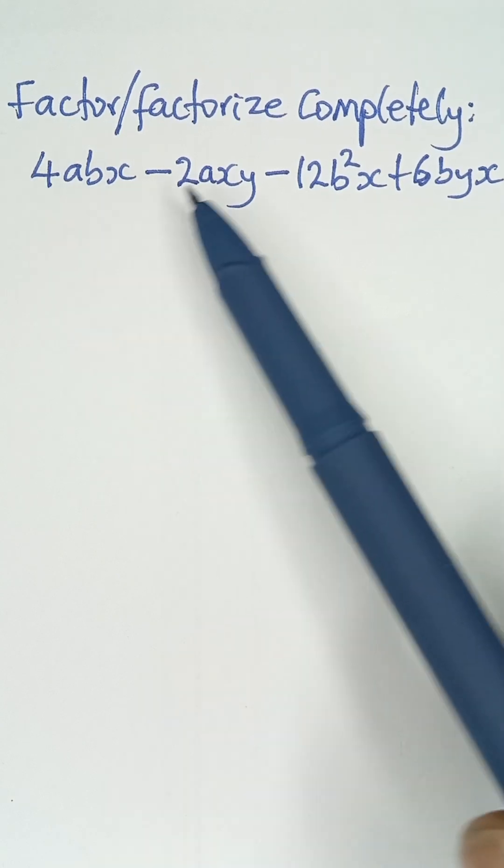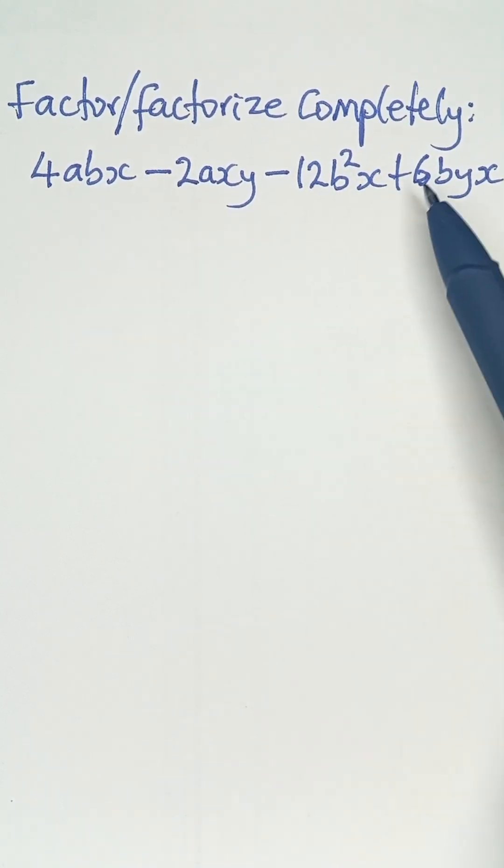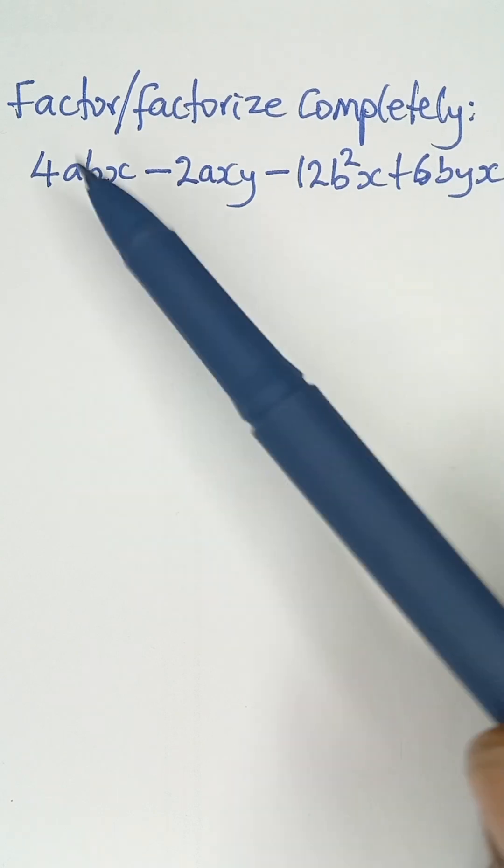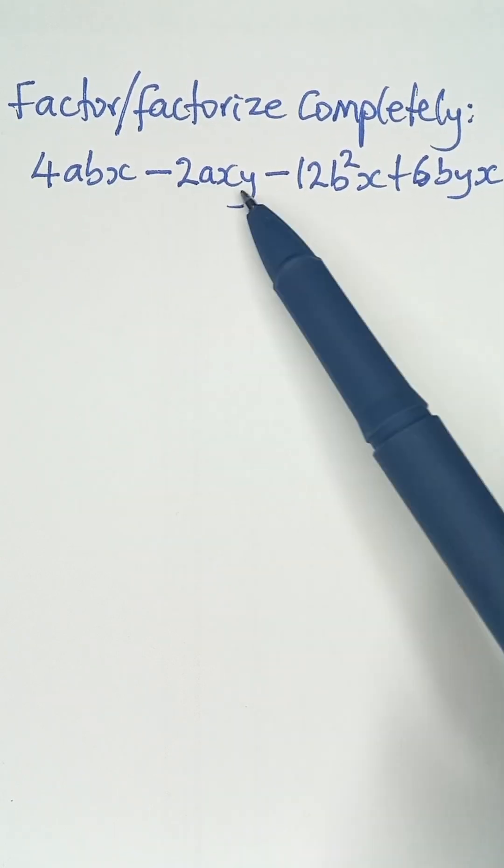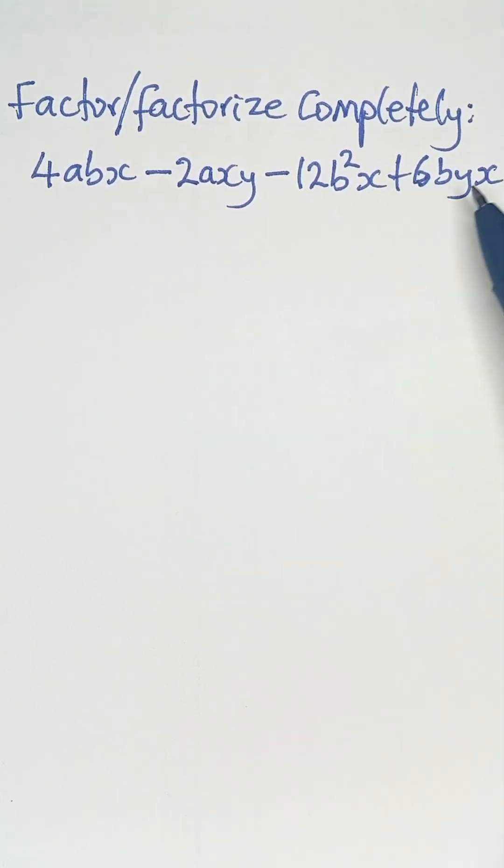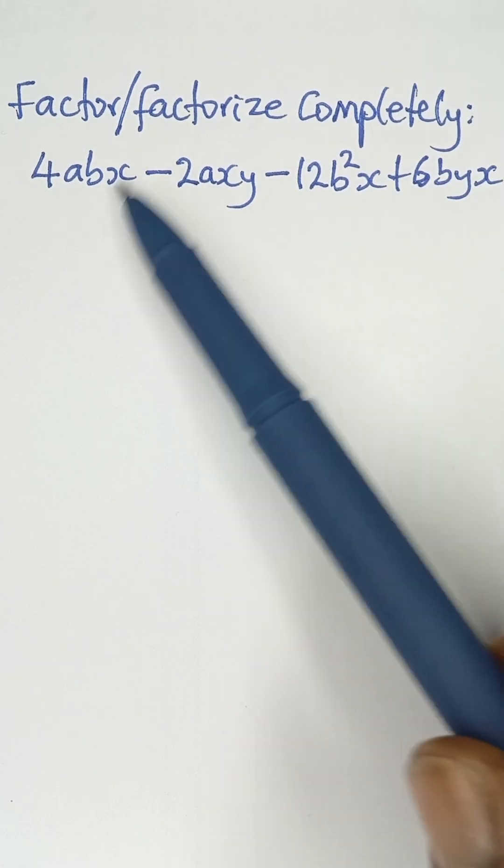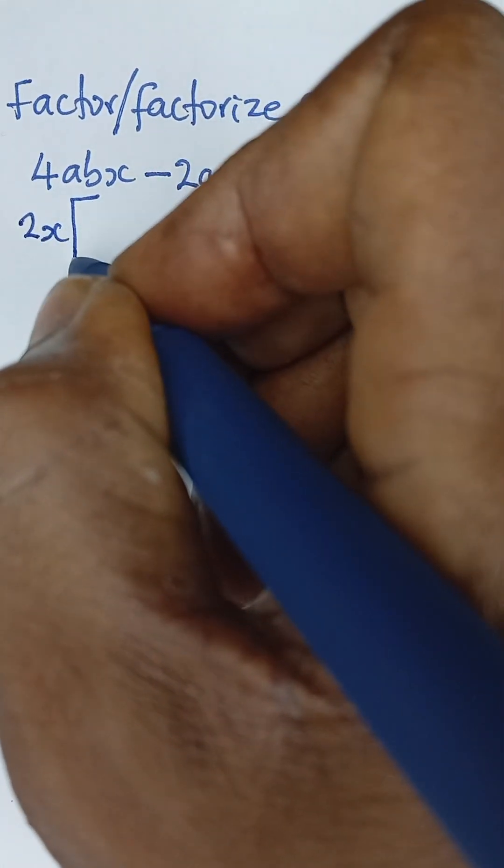The number 2 is a factor for all of them. That means all these numbers can divide 2, so we can take out 2. And then in the letters, x is common to all the letters, so we have x everywhere. So we can bring out 2x as a factor. So taking out 2x, then I can open a large bracket.